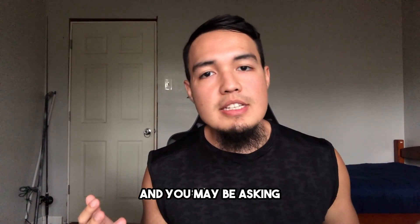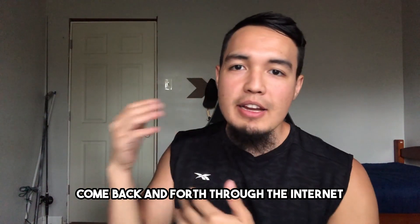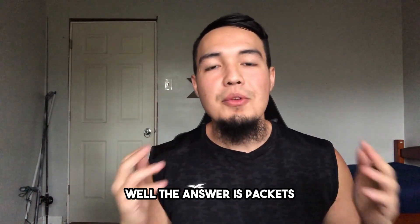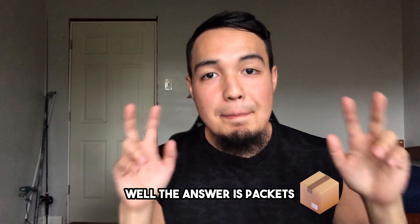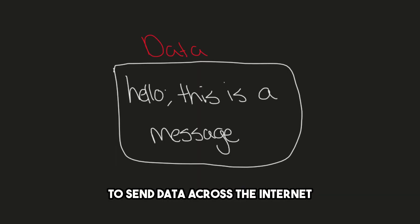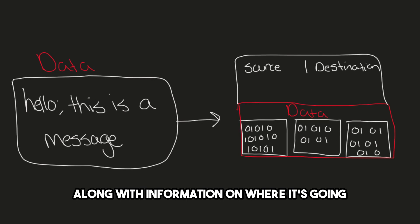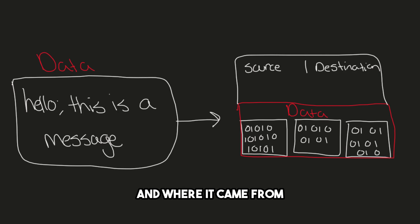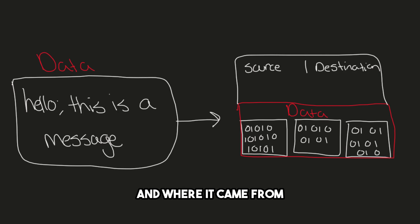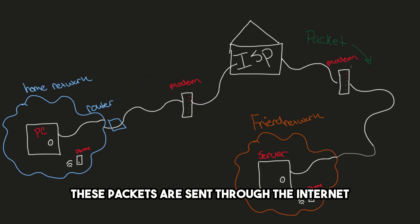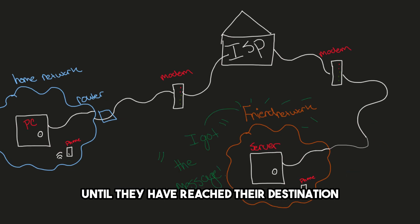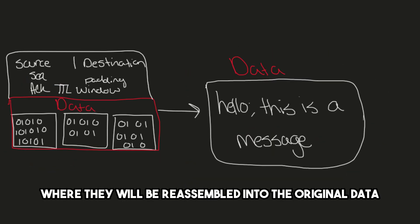You may be asking, how does all this data travel back and forth through the internet? Well, the answer is packets. To send data across the internet, it's broken up into small packets. Each packet contains a piece of data along with information on where it's going and where it came from. These packets are sent through the internet until they reach their destination, where they will be reassembled into the original data.